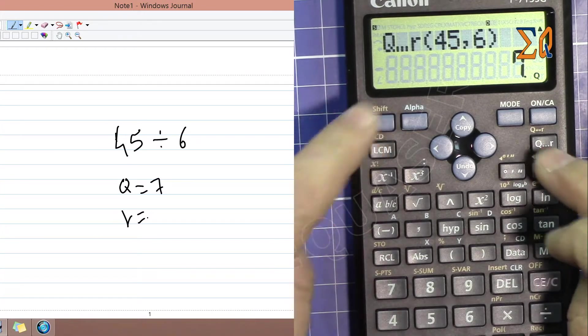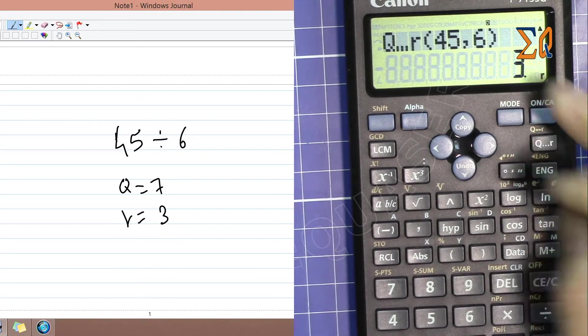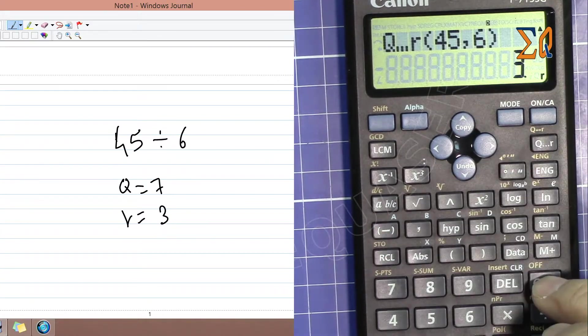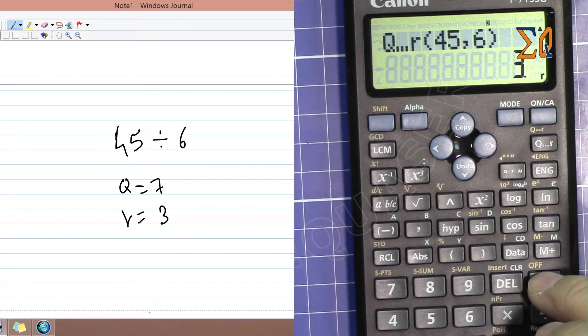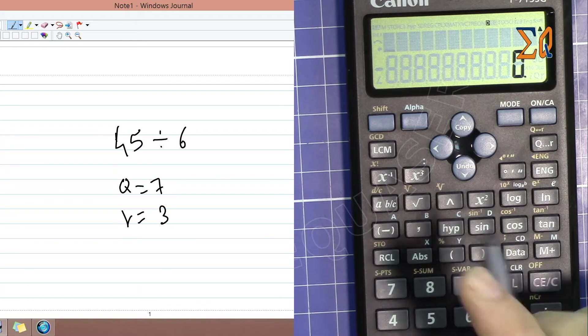By default, if you want to use these values in another calculation, you can get them from C and D. If I press Recall C, you get 7. The quotient is stored in C.